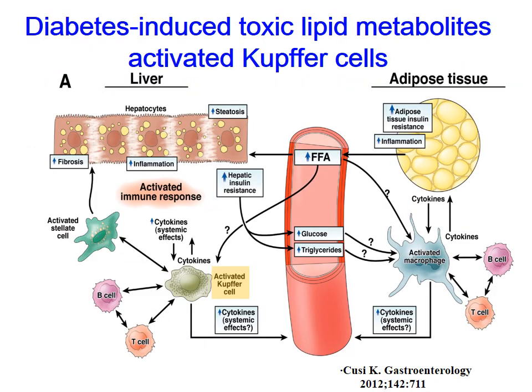Diabetes will increase the permeability of the intestine, and free fatty acids and toxic lipid metabolites will pass through the intestine and go to the liver, inducing steatosis and inflammation of the liver through activation of Kupffer cells. The toxins will also go to the adipose tissue and increase macrophage polarization toward the M1 pathway, increasing adipose tissue insulin resistance and inflammation.